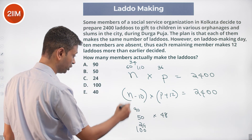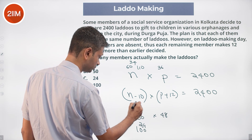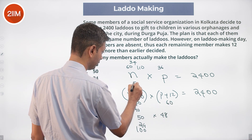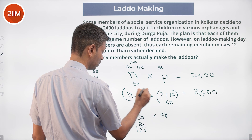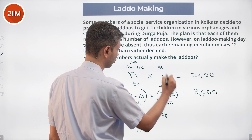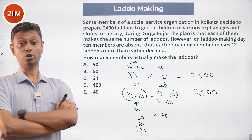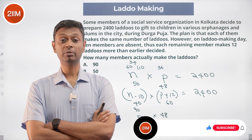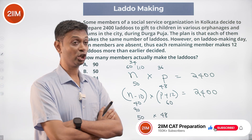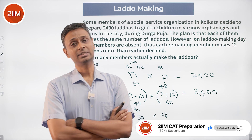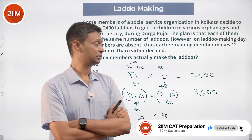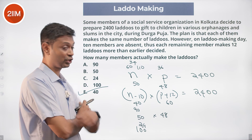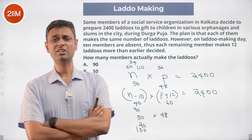N - 10 could be 40: 40 × 60 = 2400, and N = 50, so 50 × 48 = 2400. That works! 50 people each making 48 laddus would have been the original plan; with 10 fewer people, 40 members each make 12 more laddus (60 each). So answer choice E works.